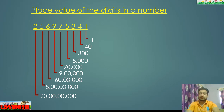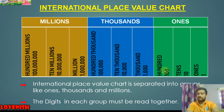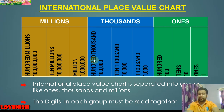Now let us see the international place value chart. Similar to the Indian chart, it also has groups: group of ones, group of thousands, and group of millions. In the international system, the ones group has ones, tens, and hundreds. In the Indian system the place after ten thousand is lakh, but in the international place value chart it is one hundred thousand. One hundred thousand equals one lakh.